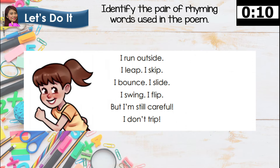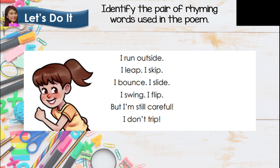Now let's have this stanza. 'I run outside. I leap. I skip. I bounce. I slide. I swing. I flip. But I'm so careful. I don't trip.' From this stanza of the poem, what are the rhyming words? The rhyming words from this stanza are: Skip, Flip, and Trip. Very good!